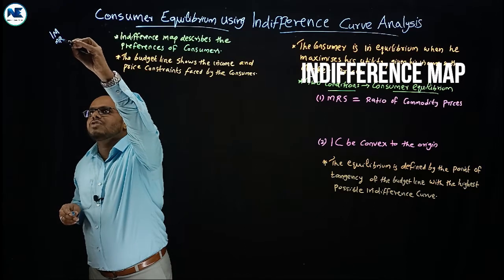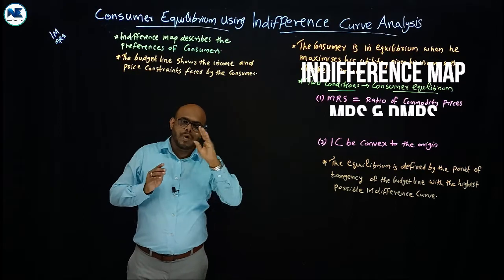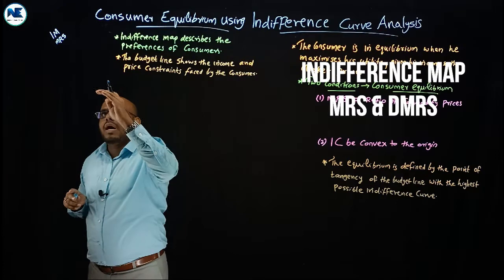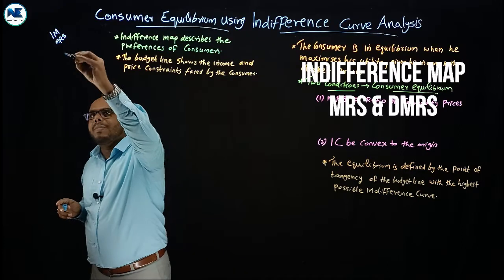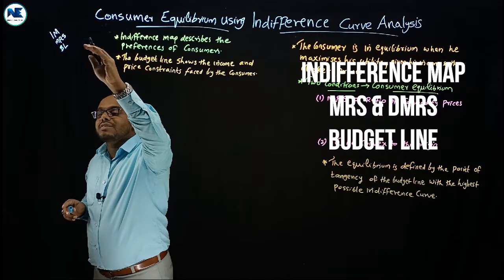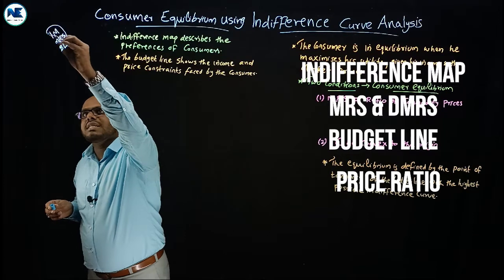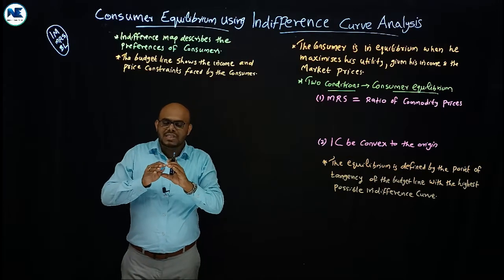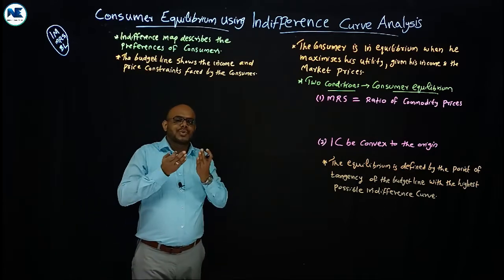The slope of the indifference curve is the marginal rate of substitution. We have already discussed marginal rate of substitution and diminishing marginal rate of substitution. Another tool we need for analyzing consumer equilibrium using indifference curve analysis is the budget line — I would like to call it BL — and its slope, which is the price ratio, or the ratio of the prices of two commodities.